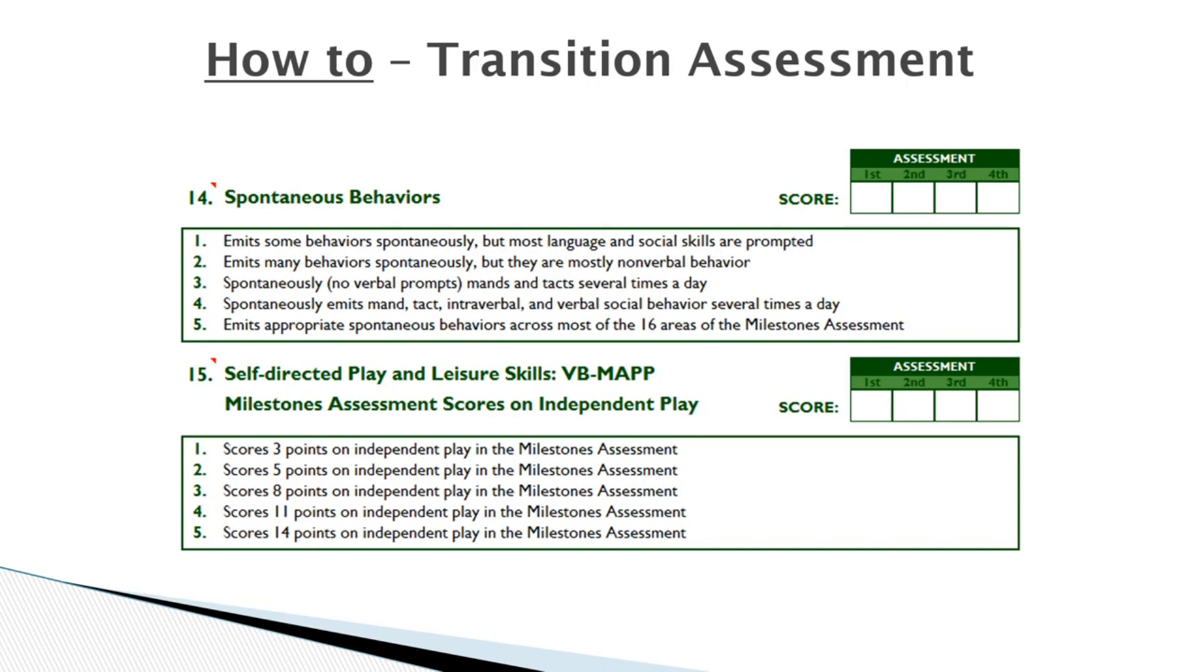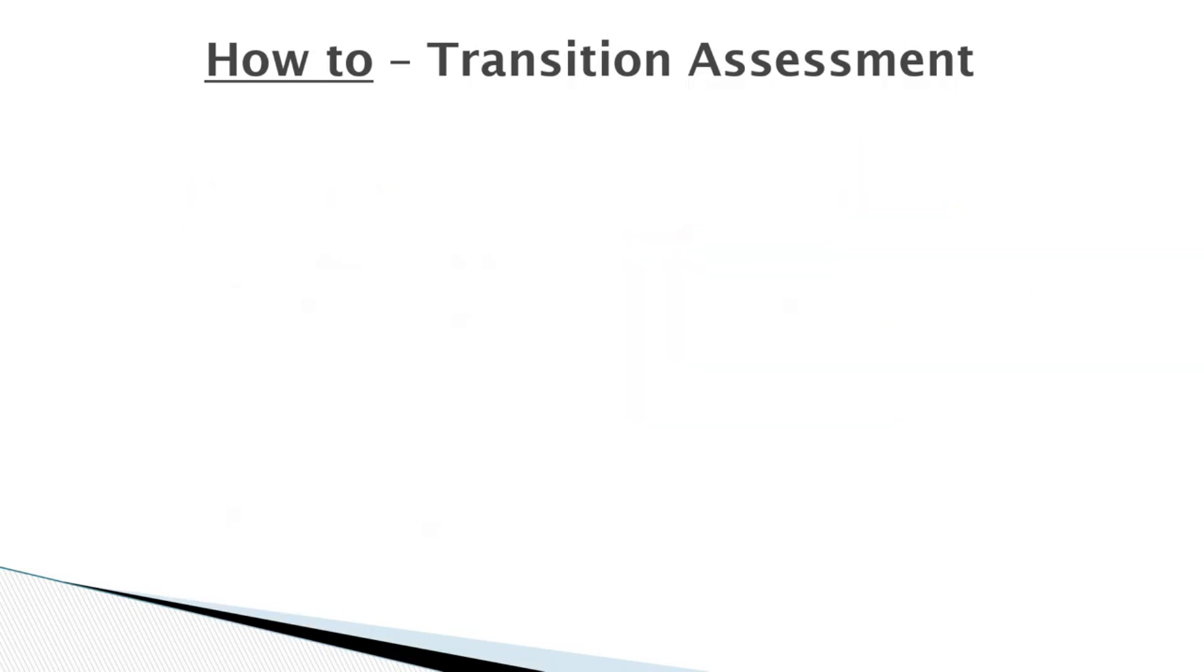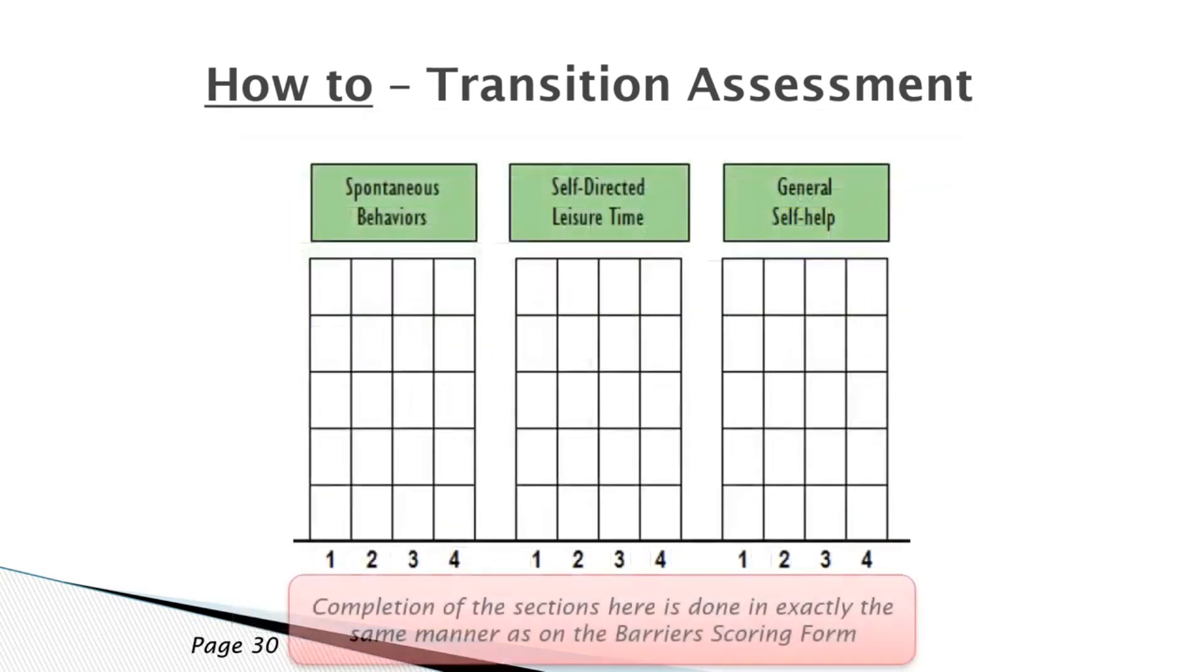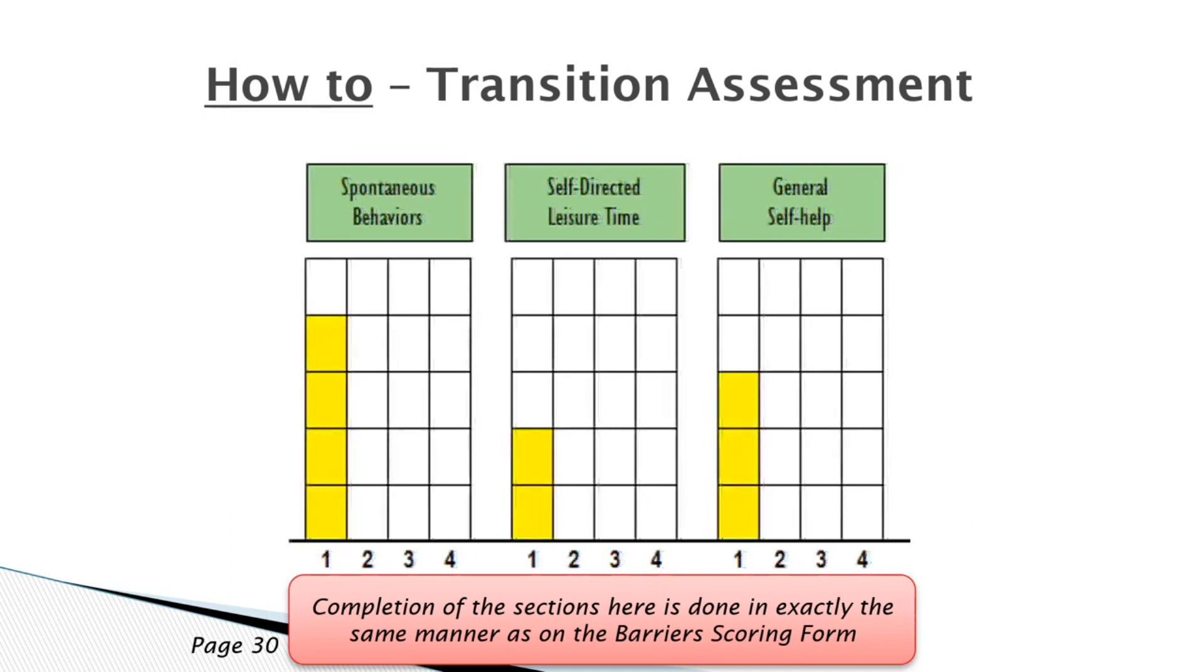If you turn to page 30 of the protocol book, you will notice that similar to the Milestone Assessment, the score ranges from 1 to 5. Some scores are summary scores from the other sections of the VB-MAPP, such as the Milestones and Barriers Assessments.